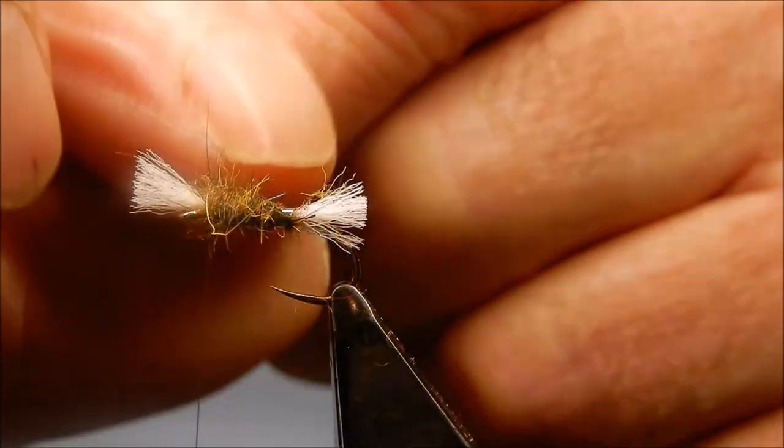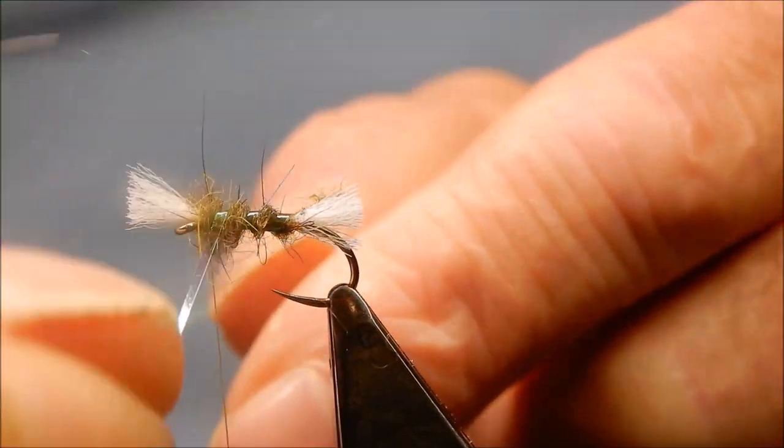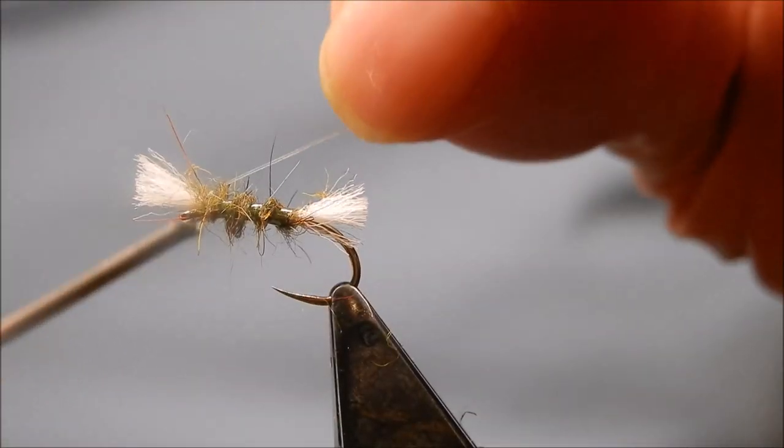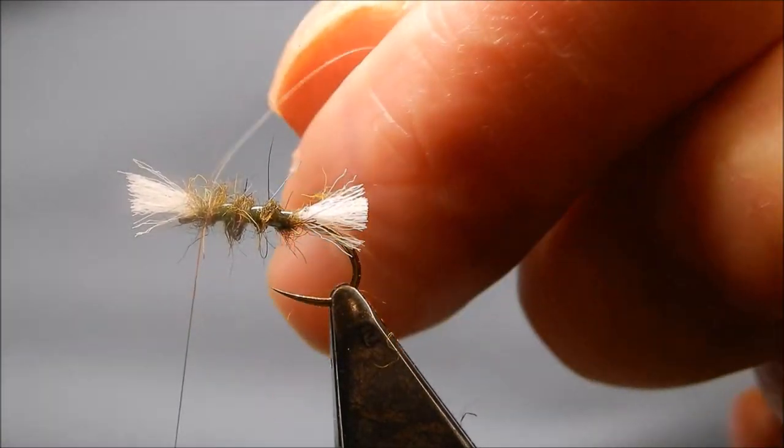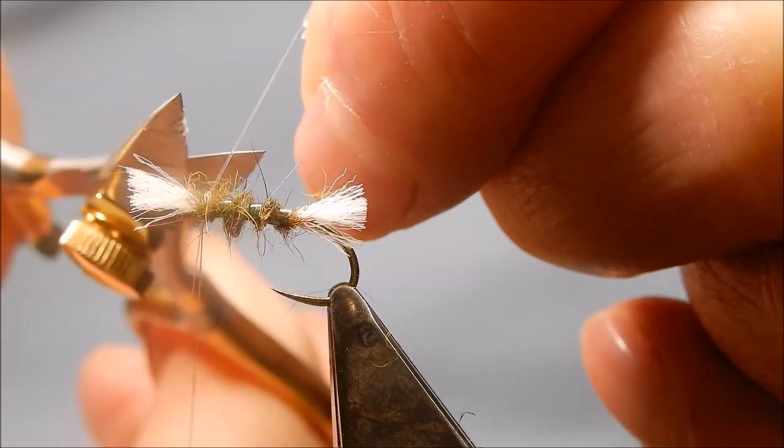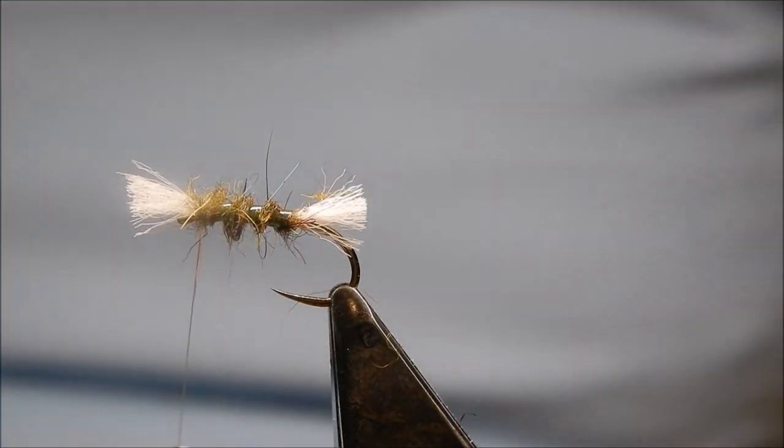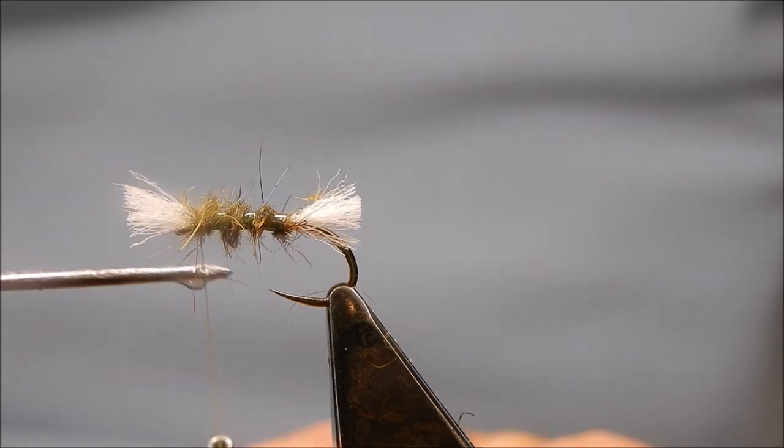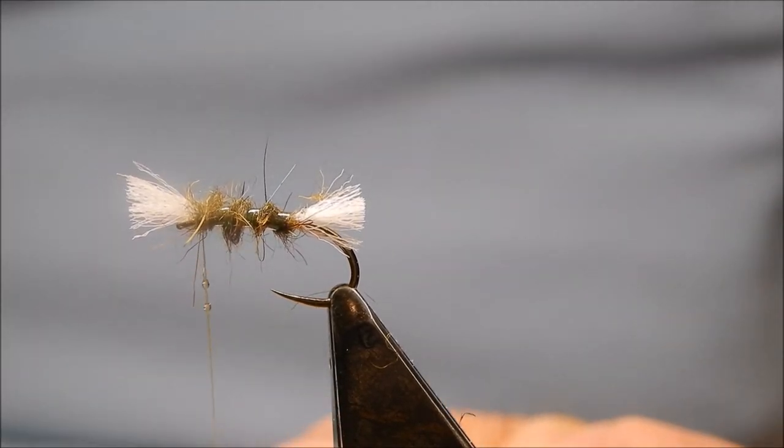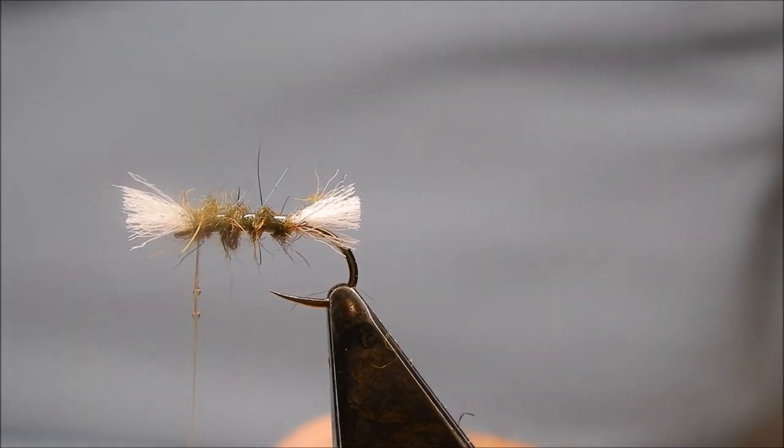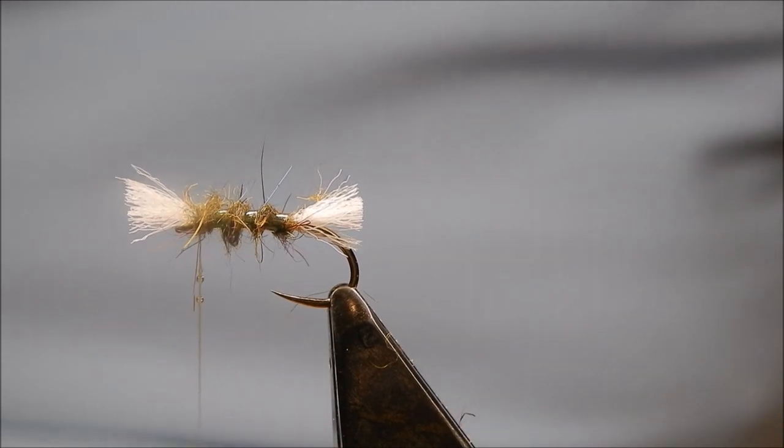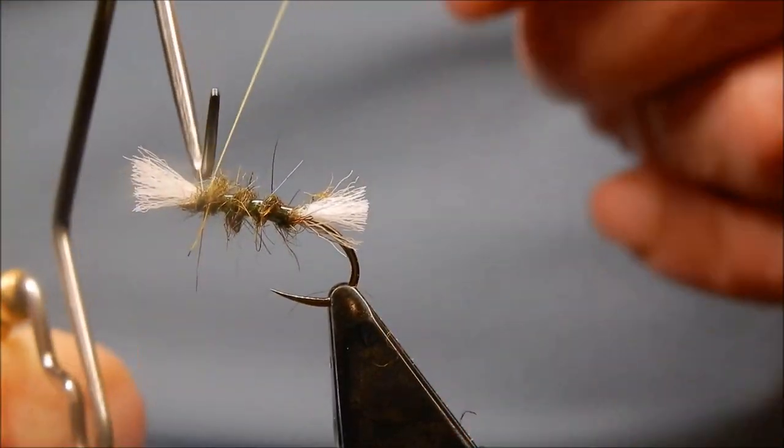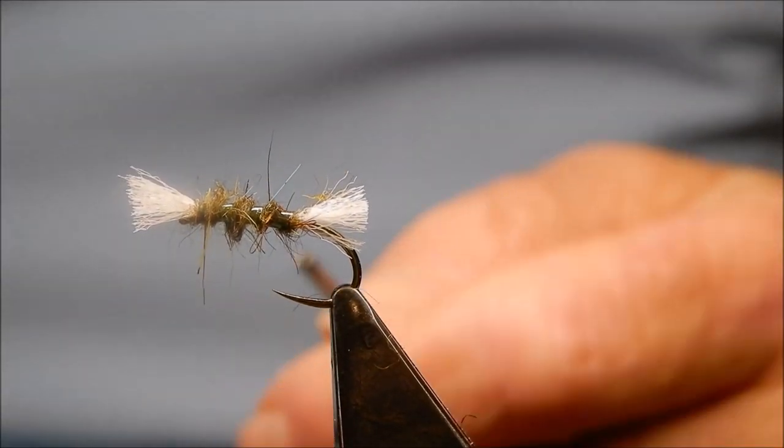Wind the ribble. Three turns, maybe four. Tie it off. And what I tend to do is just put a little touch of varnish on the thread. It stops you getting varnish all over the dubbing. Whip finish. And just trim the thread off. It's complete.